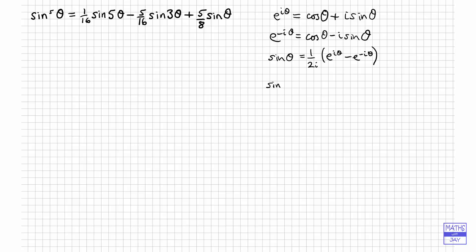It will also be useful to replace theta by n theta. We'll have sine of n theta, and all we're doing is replacing each occurrence of theta by n theta. It will be clearer if we write e to the n i theta, minus e to the minus n i theta. So that will help us with our proof.